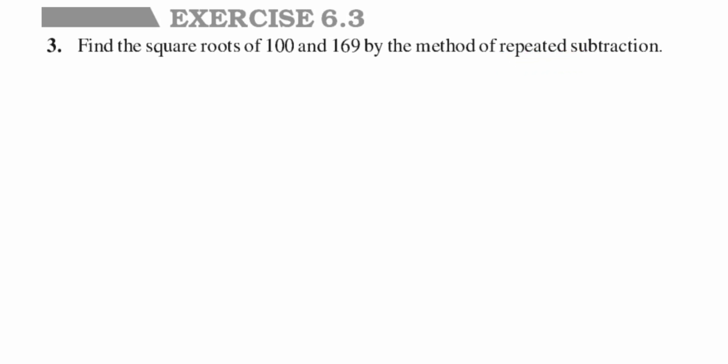So how do we do it? Repeated subtraction means we keep on subtracting by odd numbers starting with 1, and you have to keep subtracting till you get the answer 0. So let's start doing this.